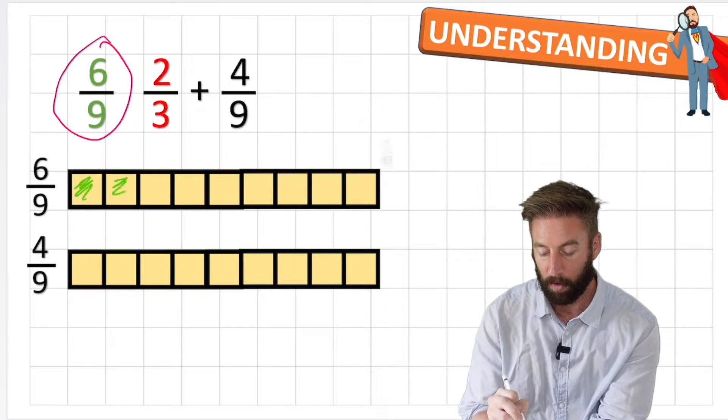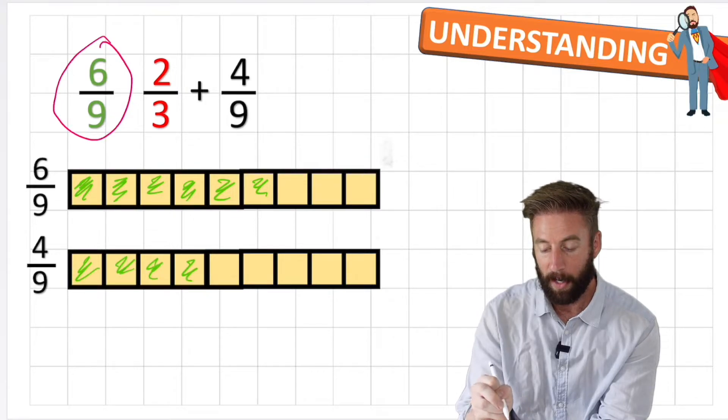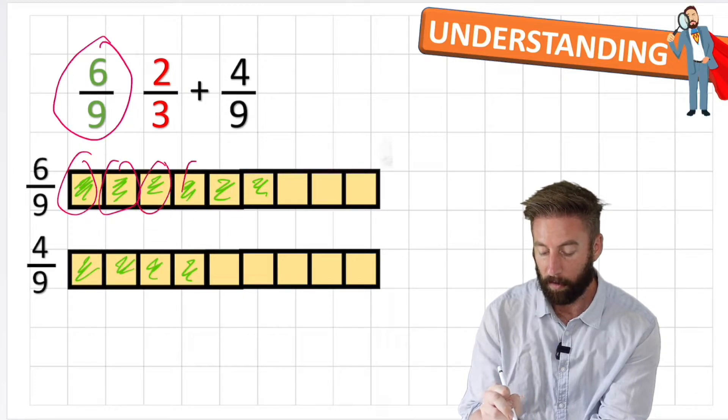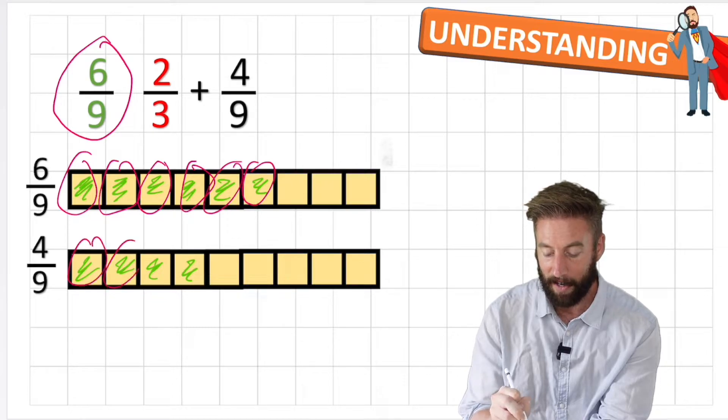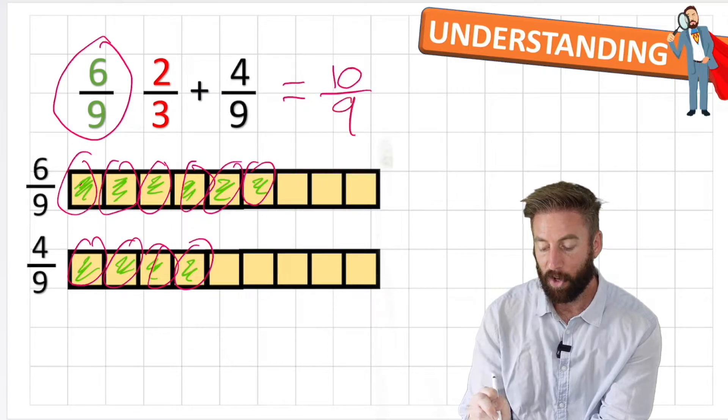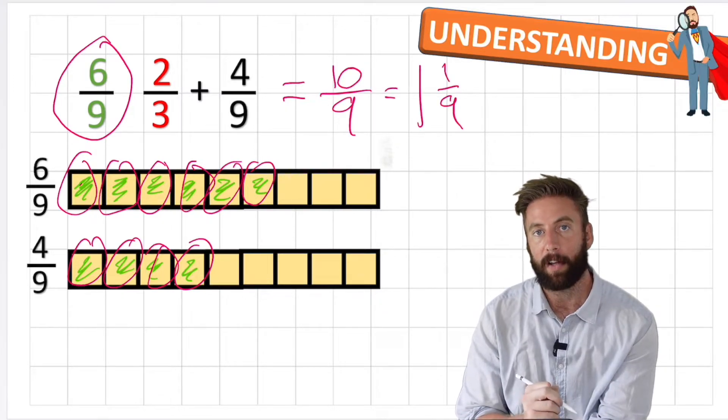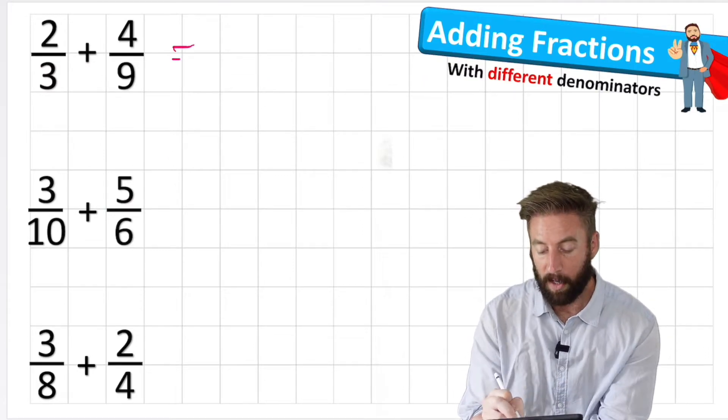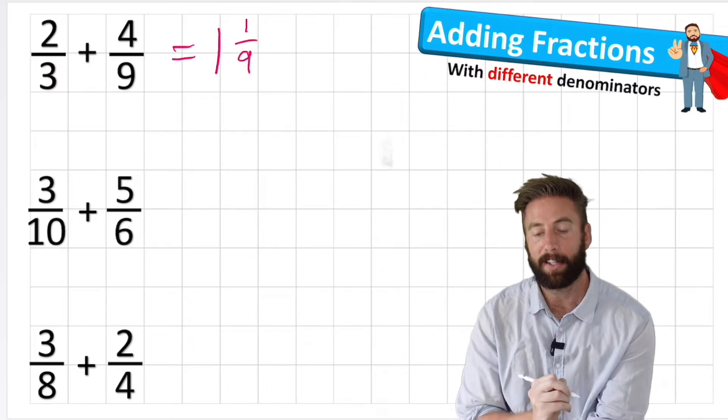So counting: one, two, three, four, five, six ninths, and one, two, three, four more ninths, leaving me a total of ten ninths or 1 and 1/9. Great. So the answer to question one is 1 and 1/9. Excellent.